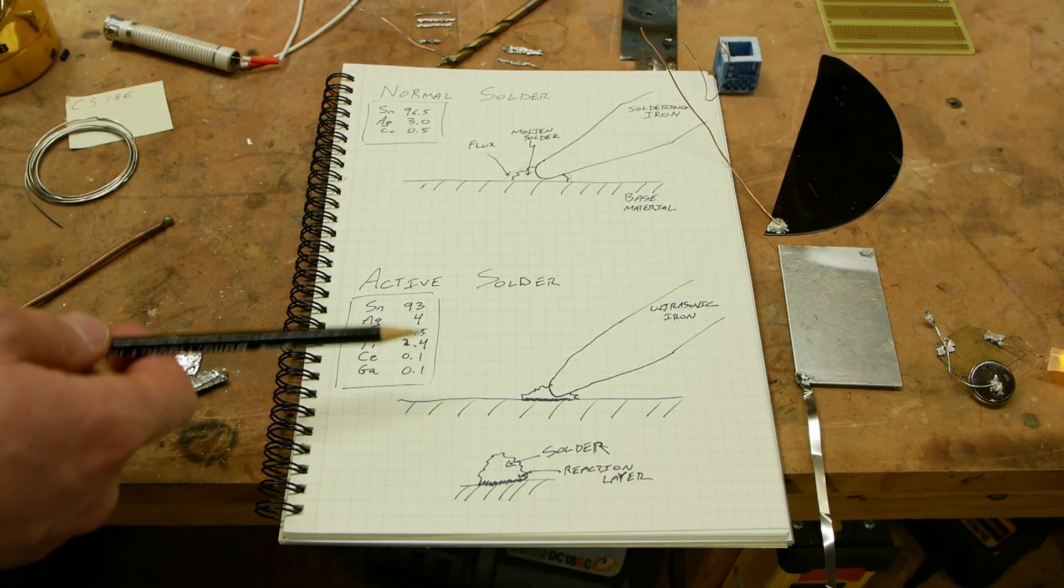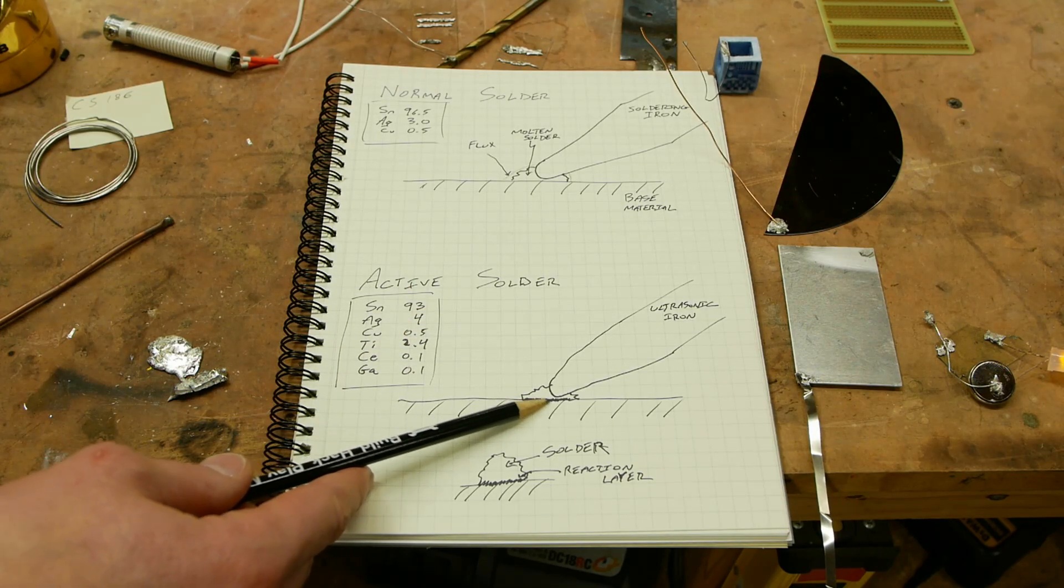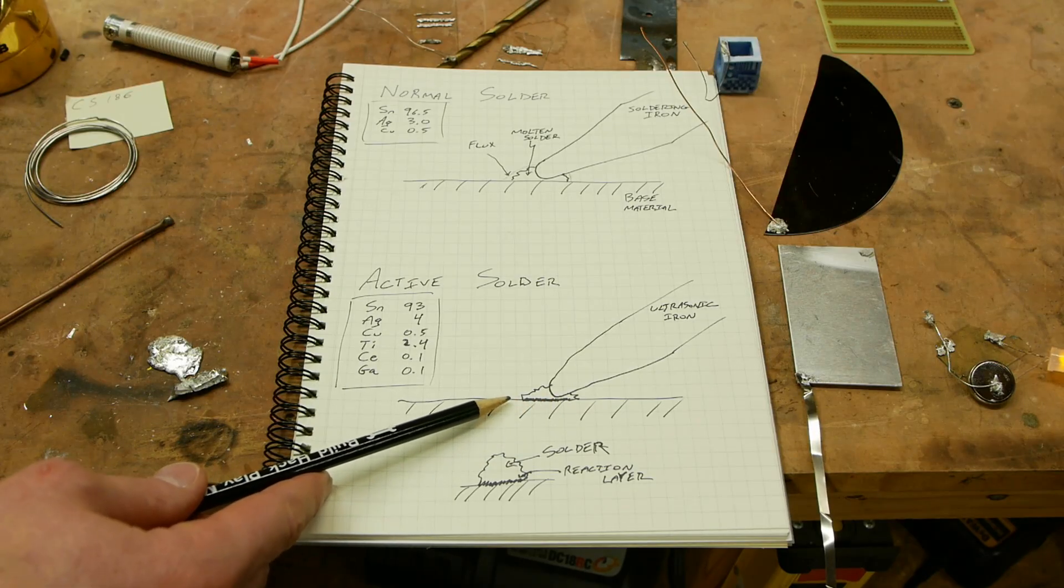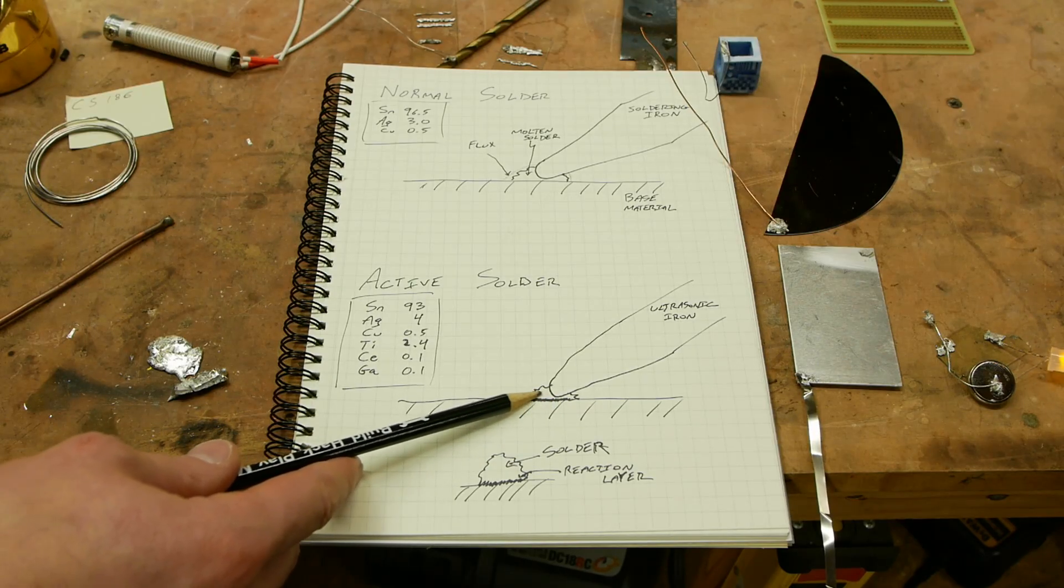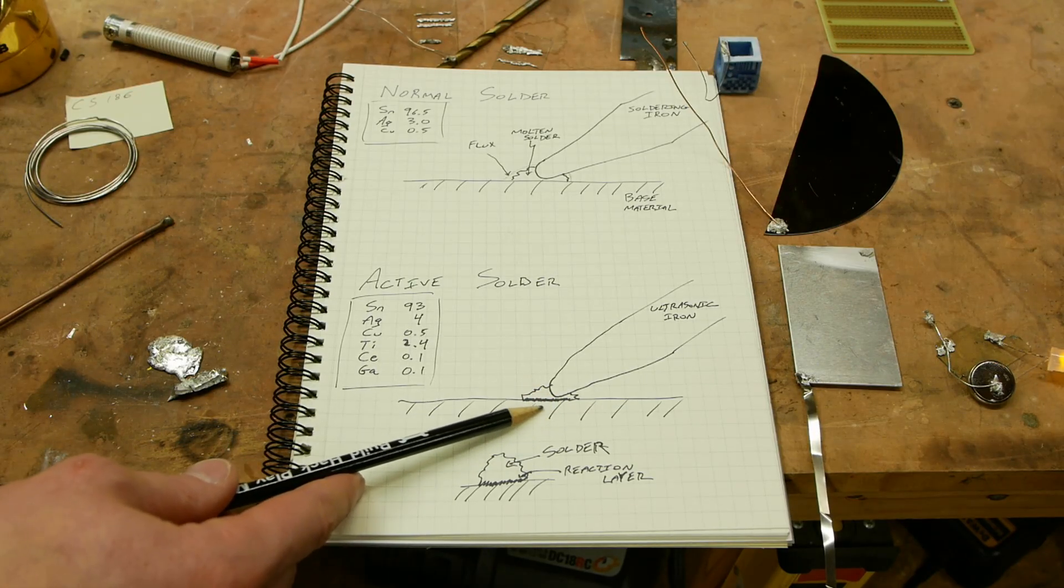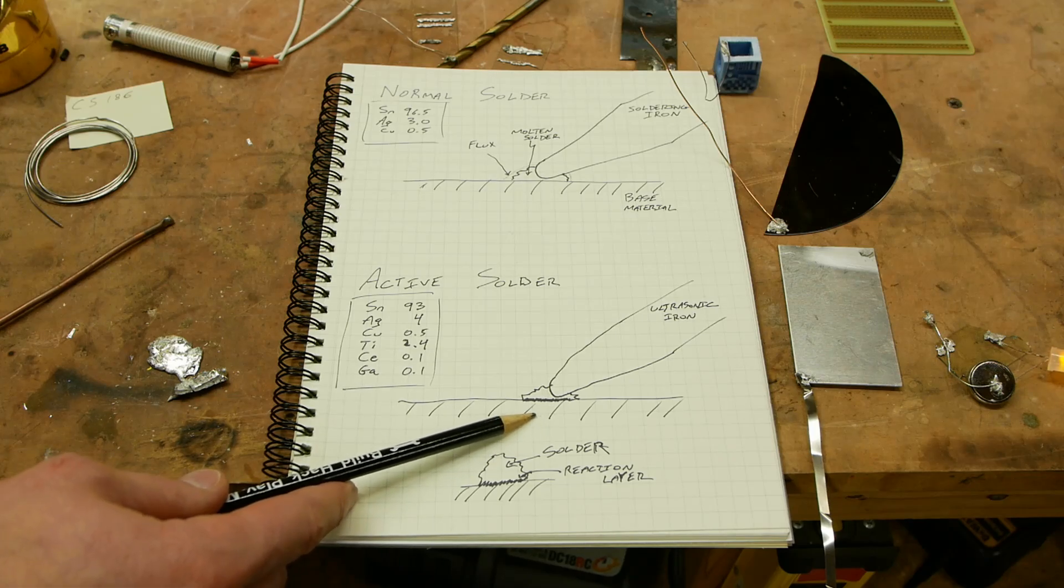In a lot of the diagrams that I've seen online describing this process, they show this kind of reaction layer here. So there might be pure metal inside the solder blob, and if your base is glass or ceramic or something.